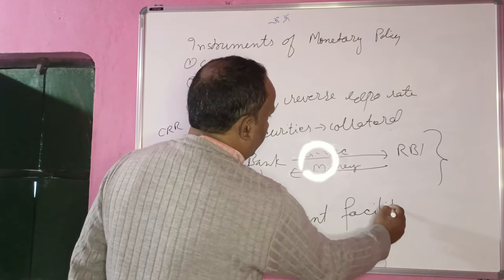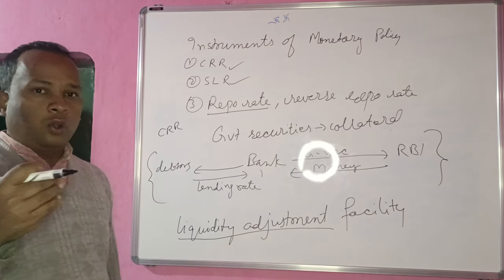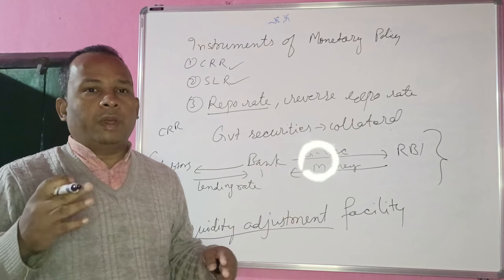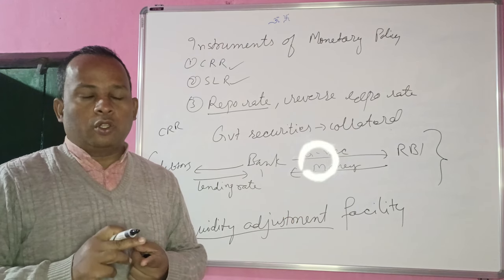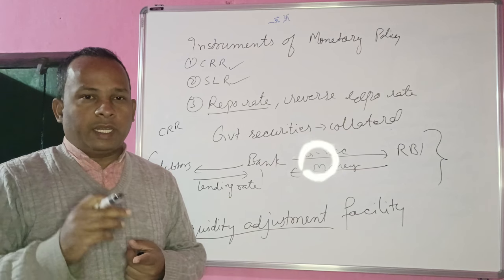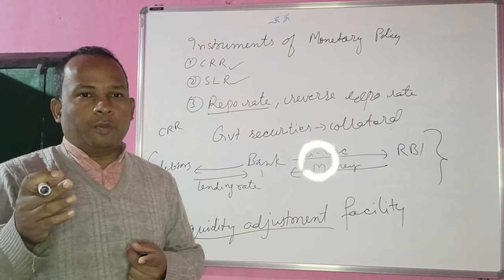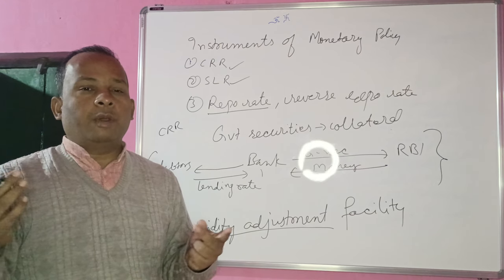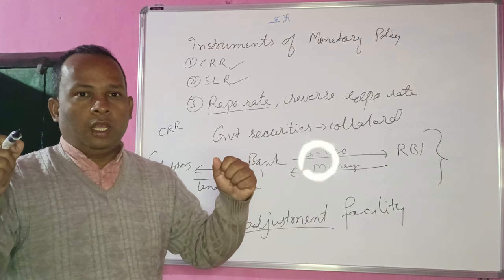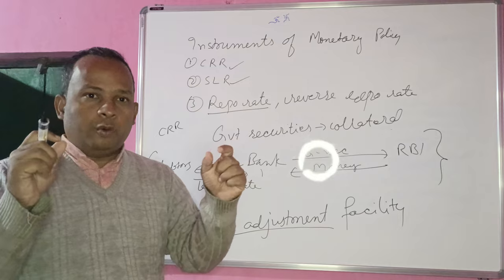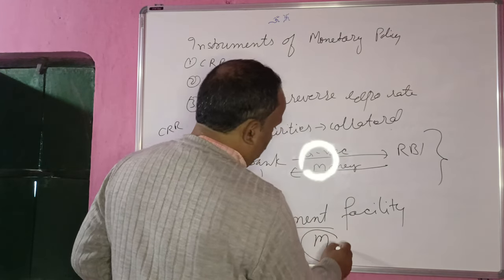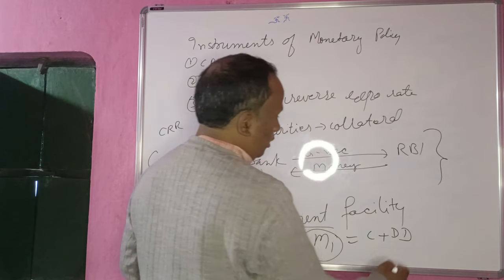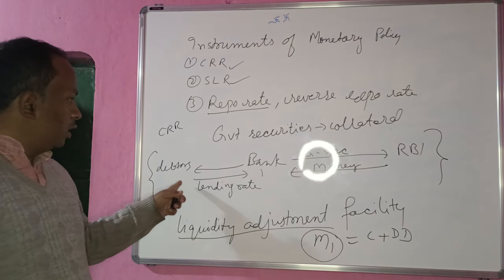The Liquidity Adjustment Facility literally means RBI wants to control liquidity in the economy. RBI wants to control money supply to achieve its objectives: controlling inflation and maintaining a smooth rate of inflation around 4–6%, or pushing GDP growth rate up when needed. RBI achieves both objectives by controlling money supply — narrow money M1, which means cash plus demand deposits with commercial banks.